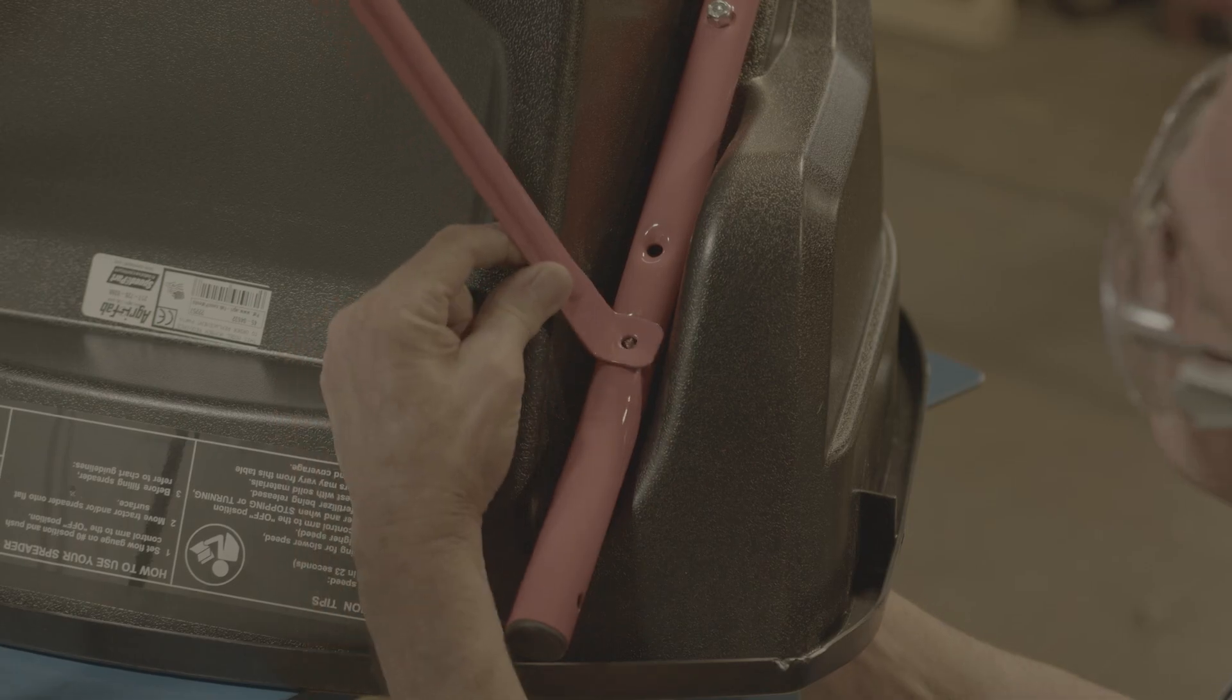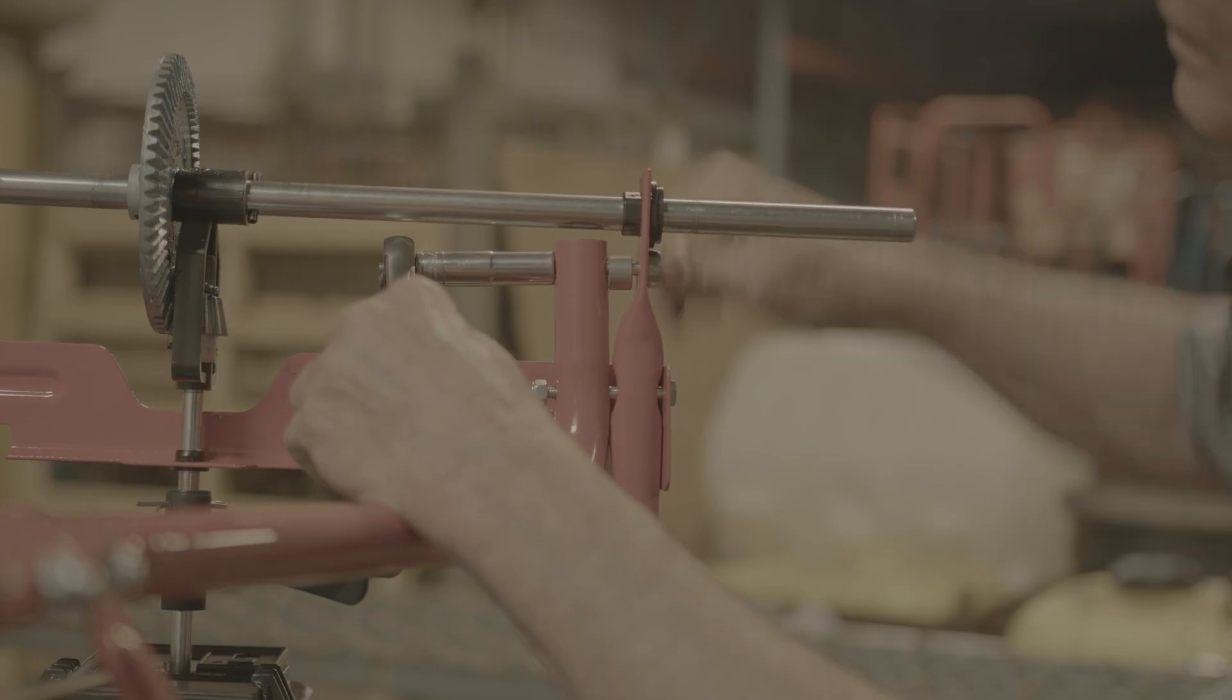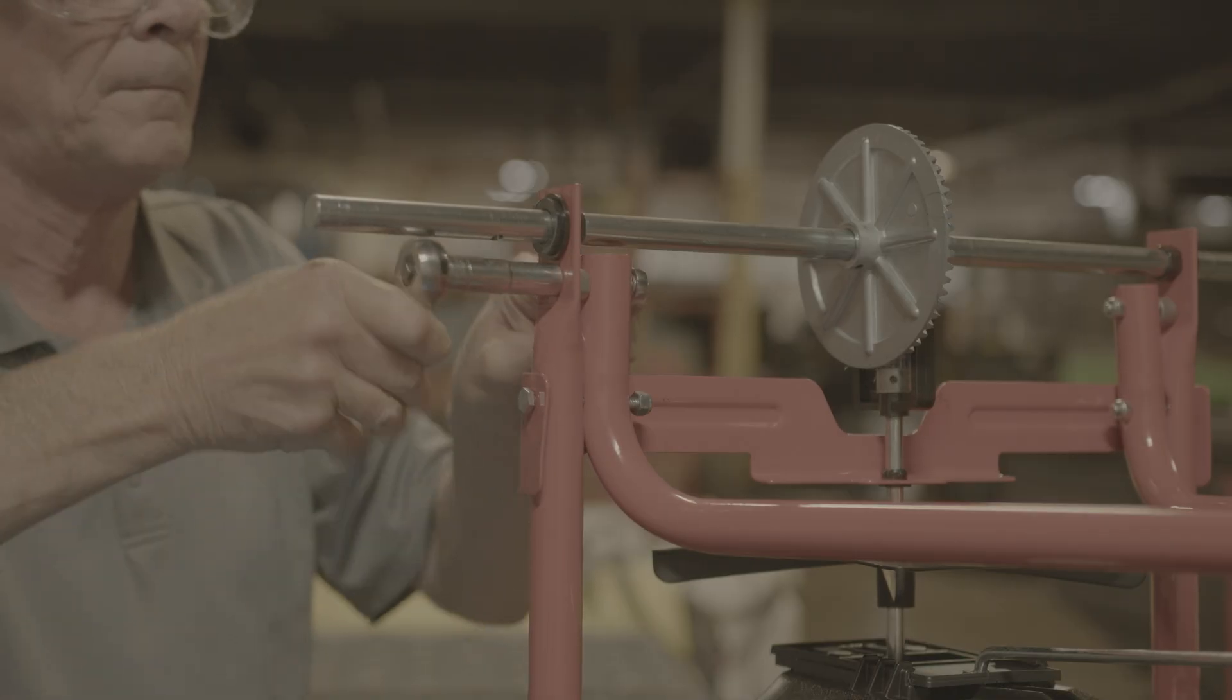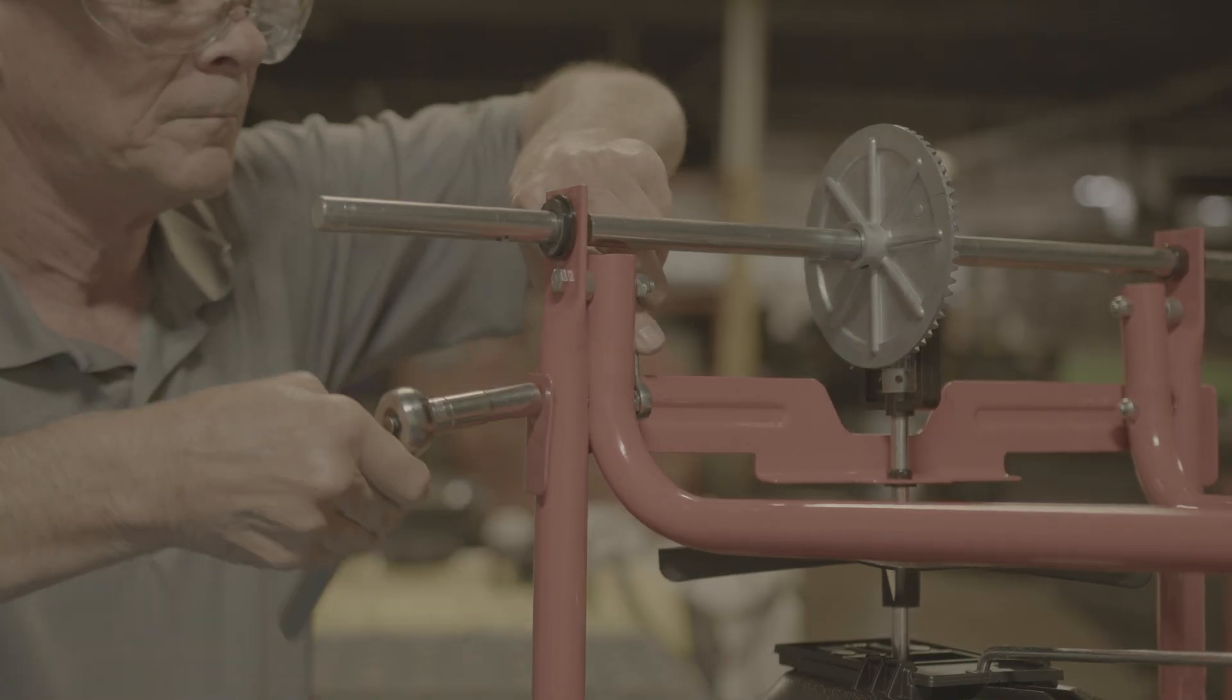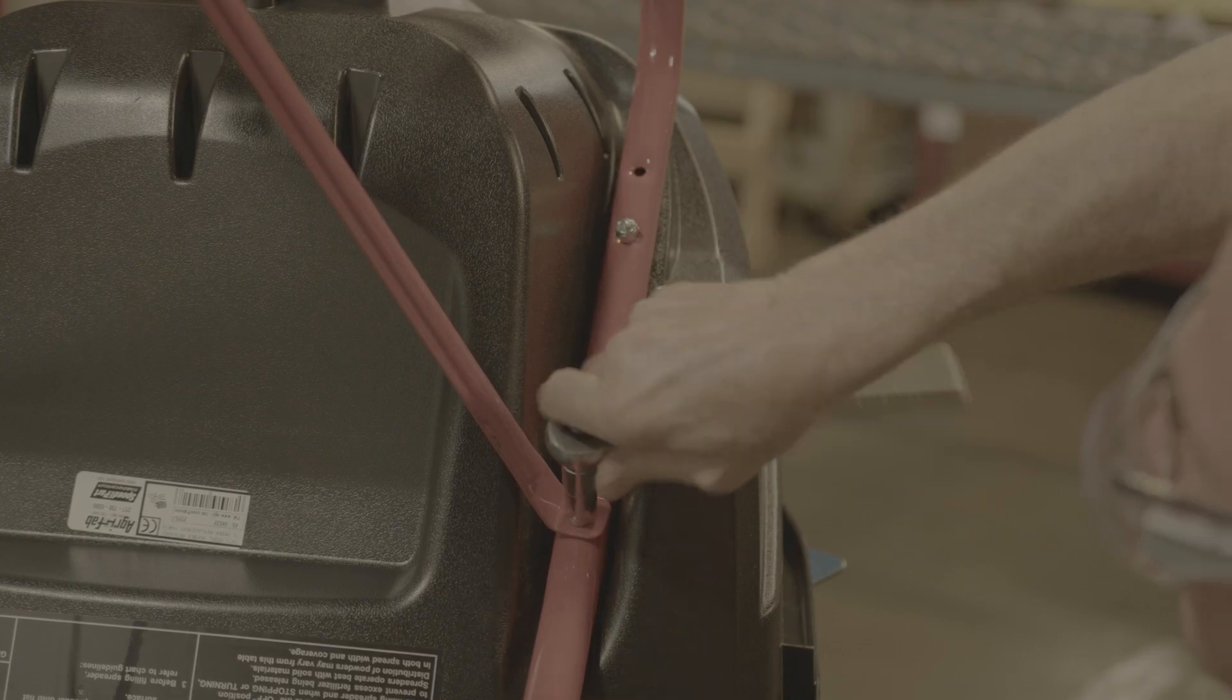We can now attach the left hopper leg back onto the hopper. Once all bolts are in place, we can tighten them all to properly secure the frame.